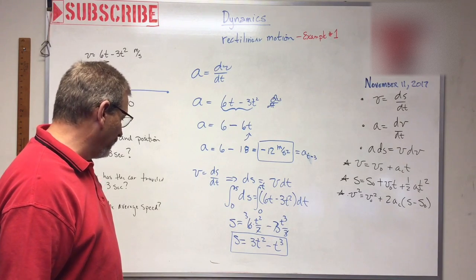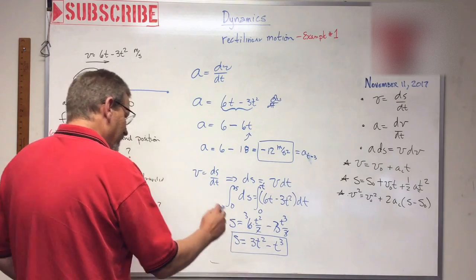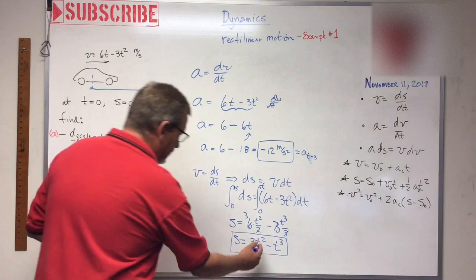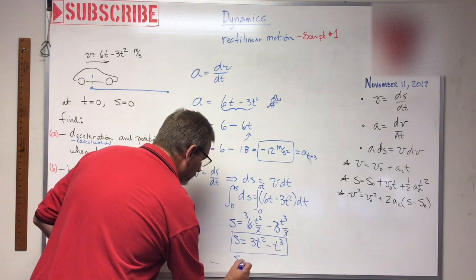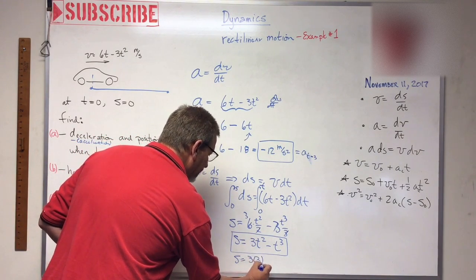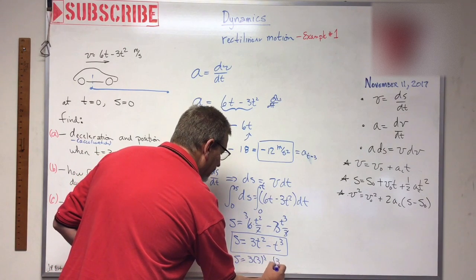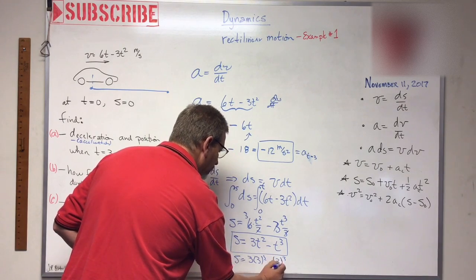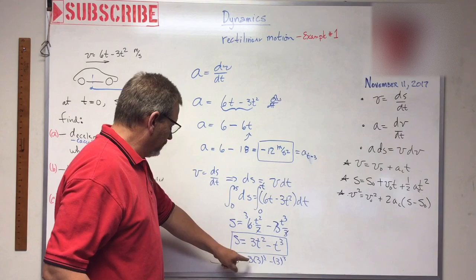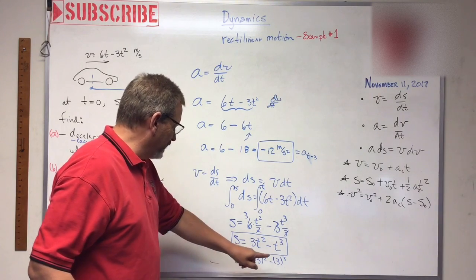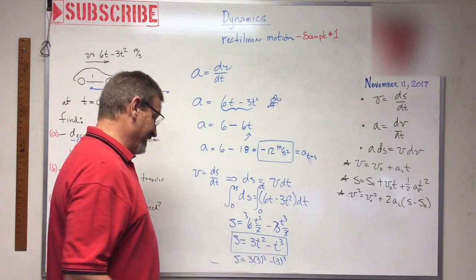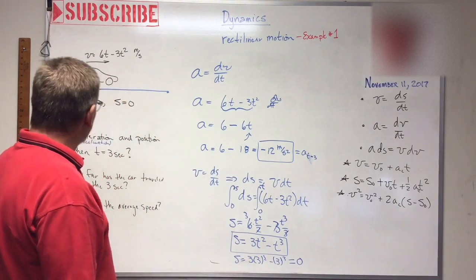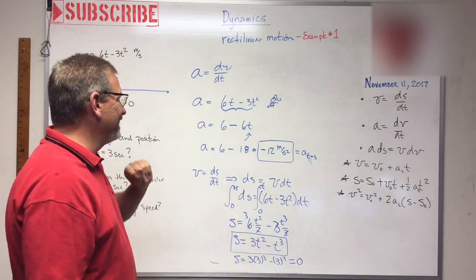Let's just see where this particle is at 3 seconds. Let's put a 3 in there. So s is equal to 3 times 3 squared minus 3 cubed. That wasn't good, was it? Let's see. 3 squared is 9 times 3 is 27, and 3 cubed is 27, so that's equal to 0. That says it never went anywhere. Oh, wait a minute, what does that say? Here's what it says.